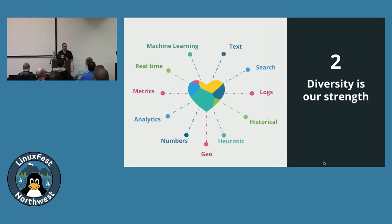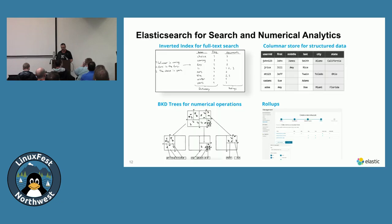As data was expanding, Elastic started implementing different indices to represent data for different search cases. As data is ingested, that's when it gets indexed — and that's how they get speed at scale. All the work is done at ingestion time, so when data is in Elastic you have instant retrieval, no matter what kind of data you're using.